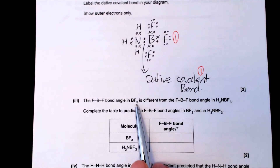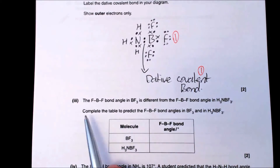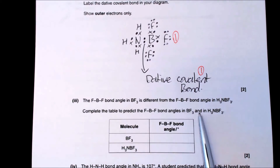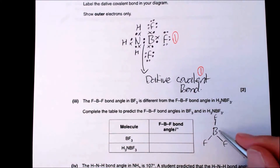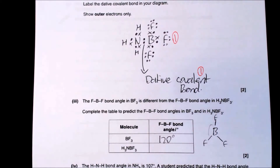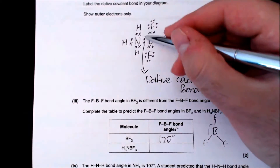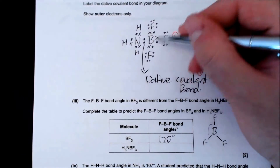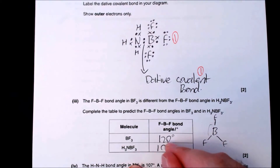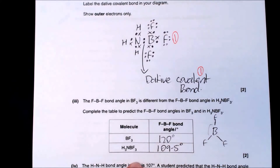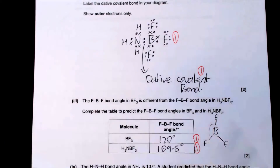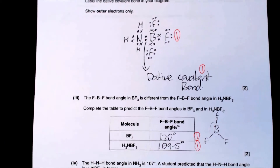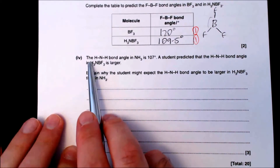The FBF bond angle in BF₃ is different from that in H₃N·BF₃. In BF₃, boron has three bonding pairs and no lone pairs, giving a trigonal planar structure with a bond angle of 120°. In H₃N·BF₃, the boron now has four bonding pairs in a tetrahedral arrangement, giving an FBF bond angle of 109.5°. The 0.5 is very important — two marks, one for each angle.